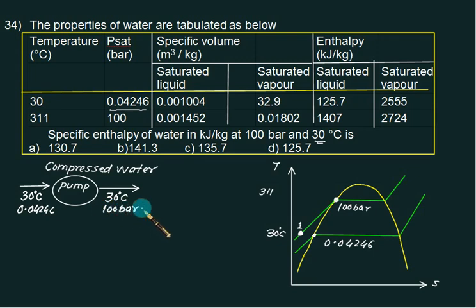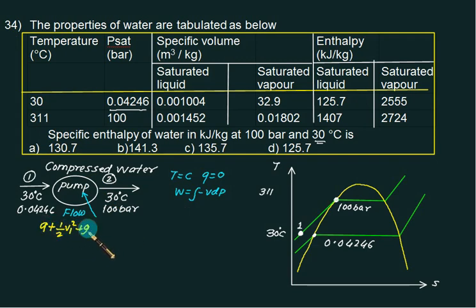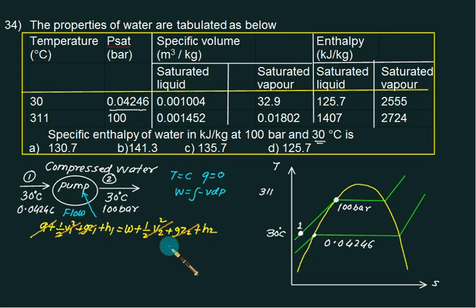Since temperature is constant from state 1 to 2, there is no heat transfer. For a flow process, the pump work is given by the integral of −V dP. Applying the steady flow energy equation: Q + ½V1² + gZ1 + H1 = W + ½V2² + gZ2 + H2. Neglecting changes in kinetic energy, heat transfer, and potential energy, the equation simplifies to H1 = W + H2.